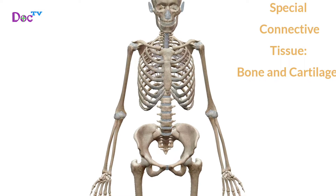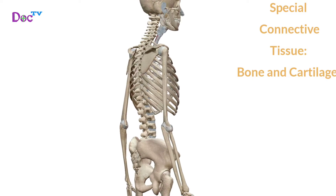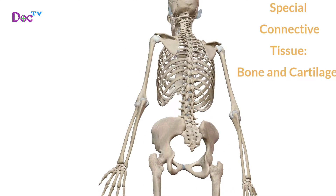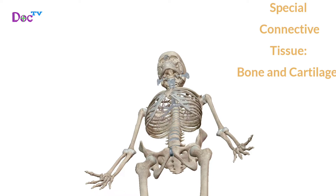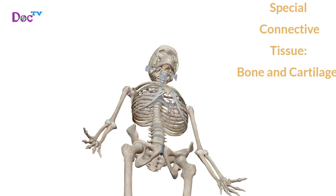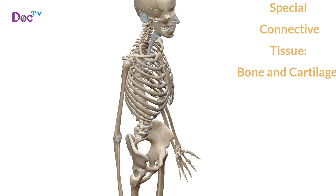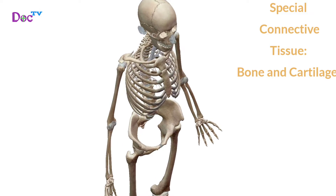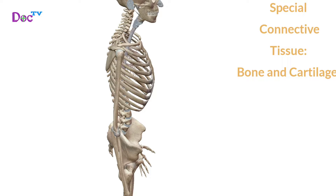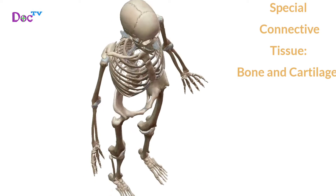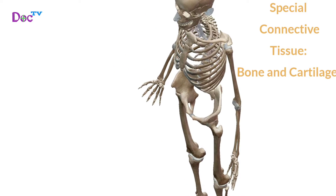Special connective tissue includes bone and cartilage. Bone tissue and cartilage are connective tissues that help form the skeletal system. Bone and cartilage have a similar matrix, but bone is harder and more rigid because it has more collagen fiber as well as calcium salts. Mature bone cells called osteocytes and mature cartilage cells called chondrocytes are located within spaces known as lacunae. Bone is vascular, whereas cartilage is avascular, receiving nutrients from blood vessels in the surrounding connective tissue.